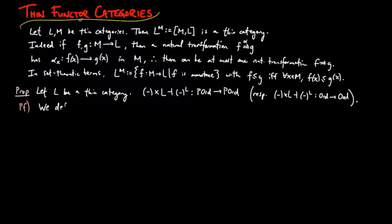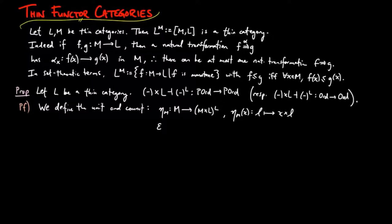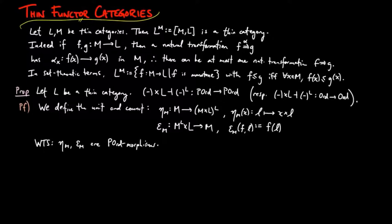For the proof, we define the unit and counit. The unit η_M is defined such that η_M on X is the morphism from L to the product of M and L, which takes L to the pair (X, L). The counit ε_M is defined as evaluation, i.e., ε_M(F, L) is F evaluated on L. We first want to show that η_M and ε_M are preorder morphisms.